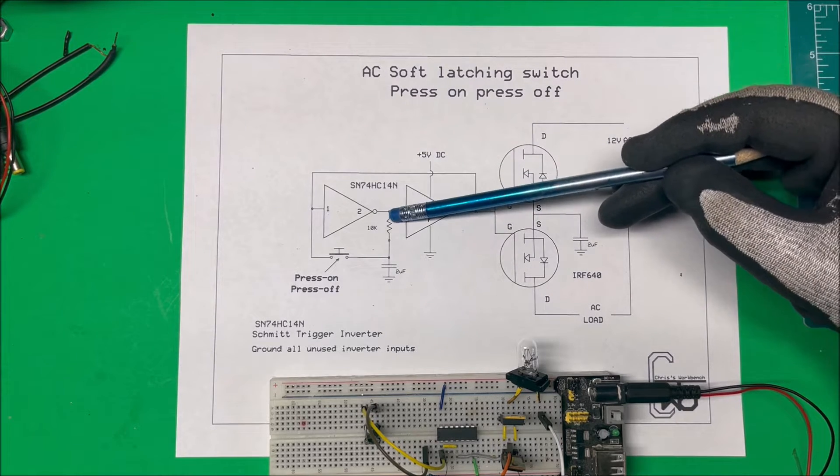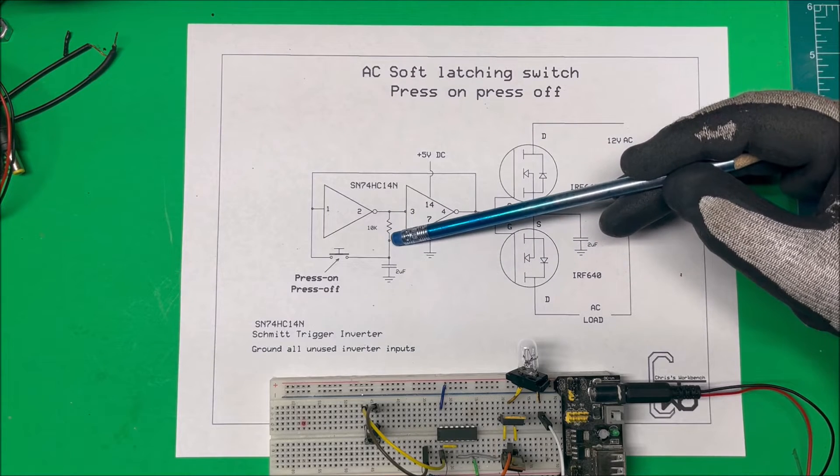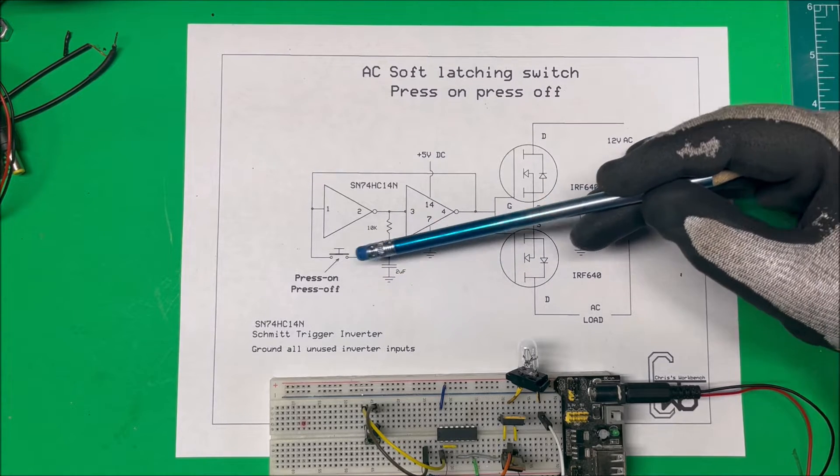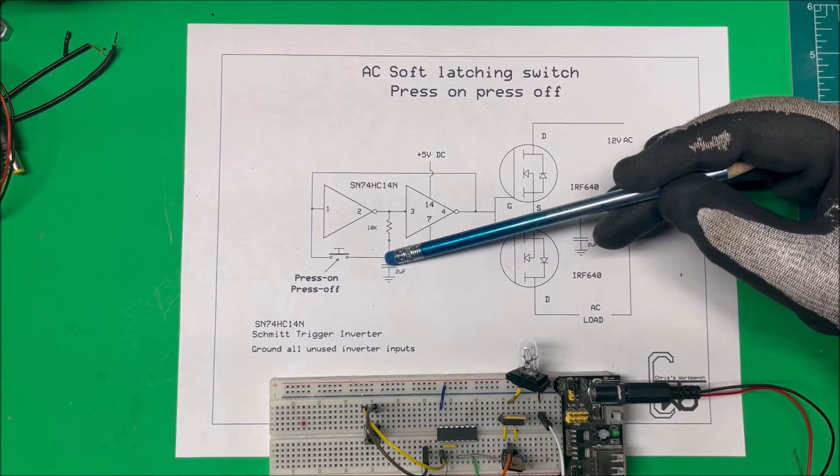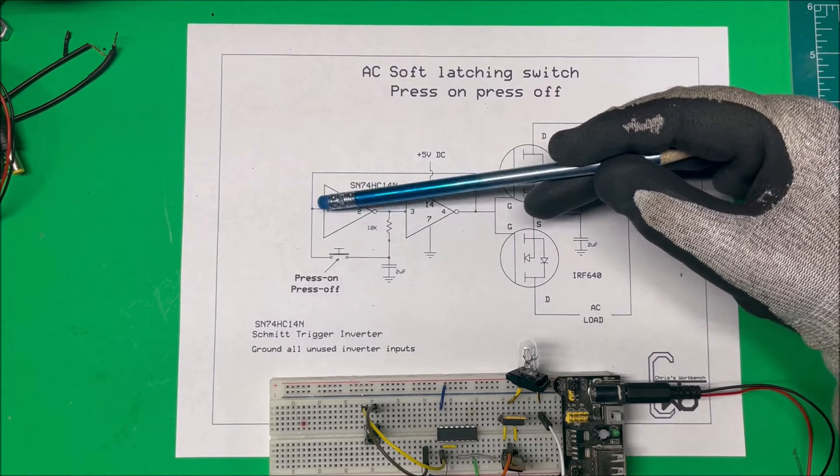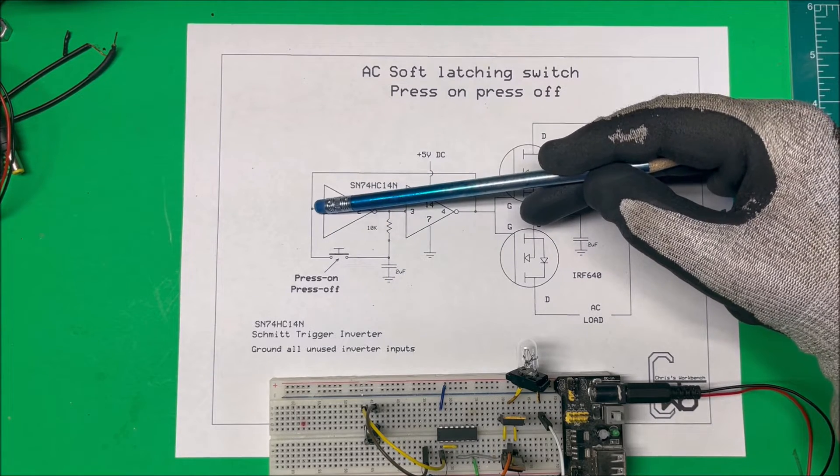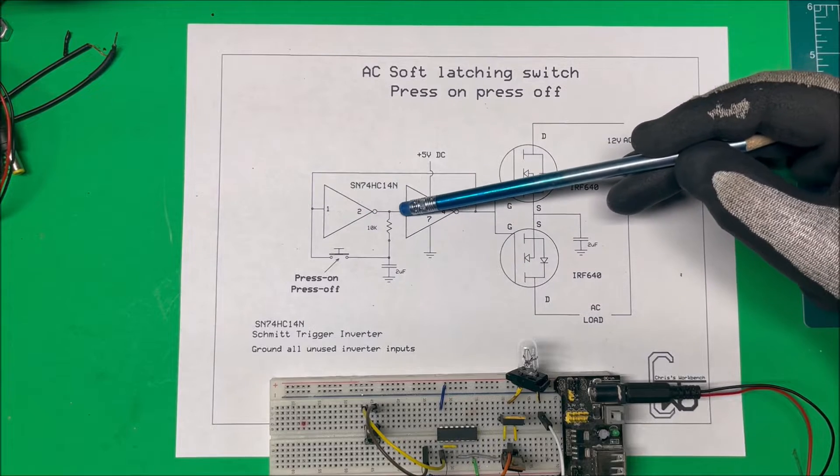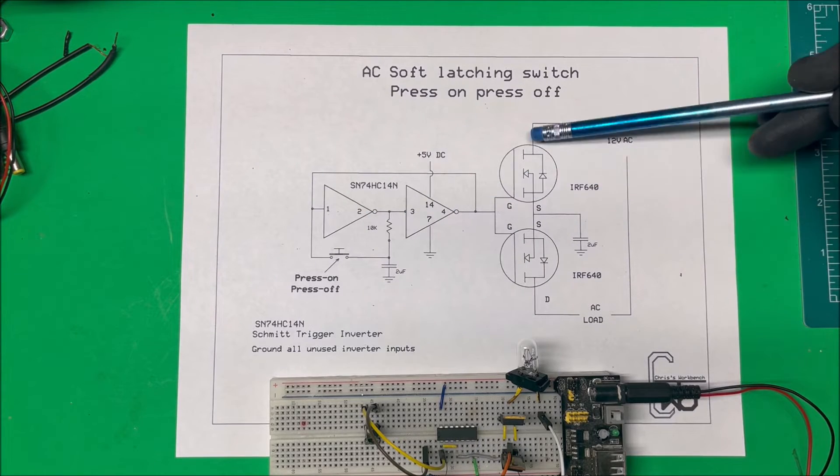When I press the switch down this capacitor is going to discharge. It's going to make this five volts become zero. If this is zero there's going to be five over here and the unit's going to turn on.